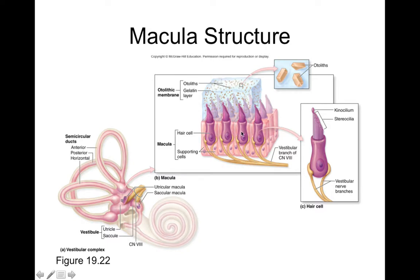Once you tilt your head, due to gravity, the otolithic membrane moves in the direction of gravity. Because the stereocilia and kinocilium are embedded within the otolithic membrane, they actually bend with the otolithic membrane. When these stereocilia and kinocilia tilt, it generates action potentials within each of these hair cells. So head tilt gets transduced to action potentials by these hair cells in the utricle and saccule.